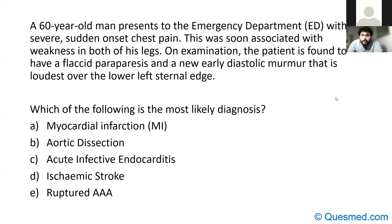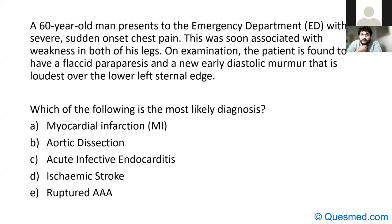A lot of you went for answer C. The big clue here is severe sudden onset chest pain combined with flaccid paraparesis — you should be thinking straight away of aortic dissection rather than ischaemic stroke. A ventricular thrombus wouldn't cause flaccid paraparesis because it would be symmetrical, which is another hint.